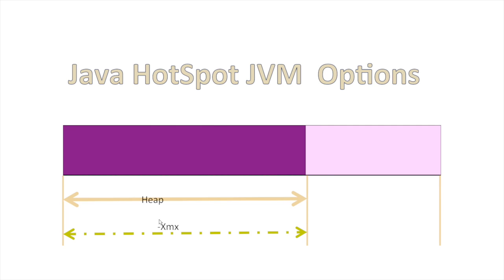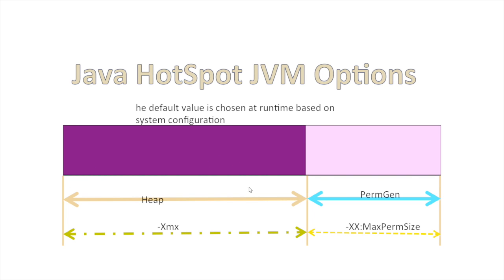This will differ between 32-bit and 64-bit machines. In a 32-bit machine it will not go beyond 4 GB, but in the case of a 64-bit machine it can go beyond 4 GB. The next block is PermGen, where all the class loading information is stored.